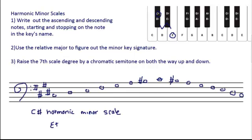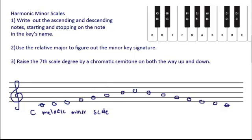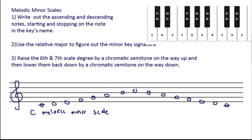Let's try melodic minor scales now. There's only one slight difference — the first step is very similar: we have to make our natural minor scale. The notes are written out from C to C. Figuring out the key signature, we use our relative major from C. Up three semitones, two note names — E-flat. E-flat major is going to have three flats, so we can write in those flats and now we have our natural minor scale.